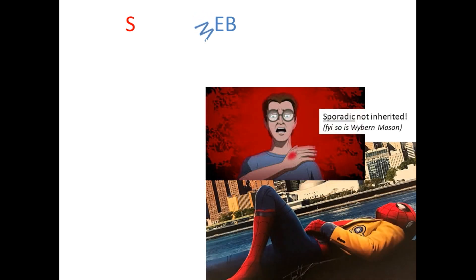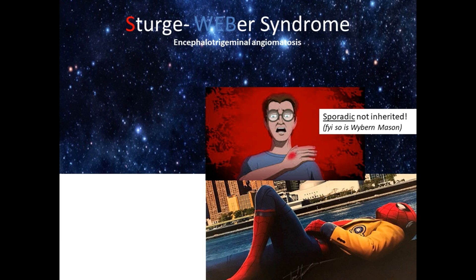I have no financial disclosures from Vin Diesel or Reese's Pieces. The first phacomatosis I'll review is Sturge-Weber, also known as encephalotrigeminal angiomatosis. I like to think of Spider-Man — the web in Sturge-Weber helps. Spider-Man was not born Spider-Man; he was bit by a spider. Similarly, Sturge-Weber is not inherited — it is sporadic, as is Wyburn-Mason, which we'll discuss later.